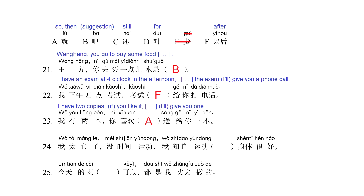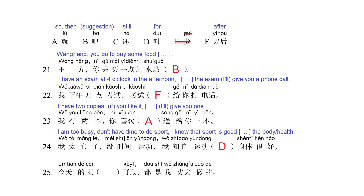Sentence number 24: I'm too busy, I don't have time to do sport. I know that sport is good — blank — the body or health. Remember that 身体 can also be translated as 'health' in some contexts. For this blank we have letter D, 'duì', meaning 'for'. '我知道运动对身体很好' — I know that sport is good for the body, for the health.